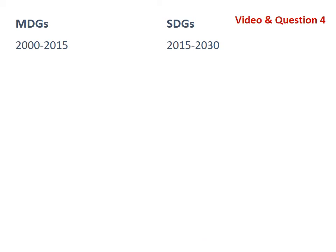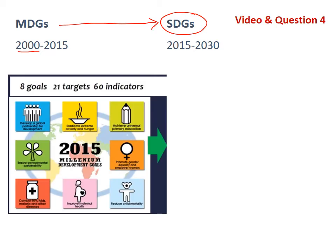We're going to look at the MDGs in a little more detail, mainly so you understand the reason for the SDGs. The Millennium Development Goals were written in 2000 with a 15-year timeframe. They were simpler than the SDGs — there were only eight goals: ending poverty and hunger, achieving education, gender equality, reducing child mortality, improving maternal health, combating HIV/AIDS and other diseases, ensuring environmental sustainability, and developing a global partnership for development.